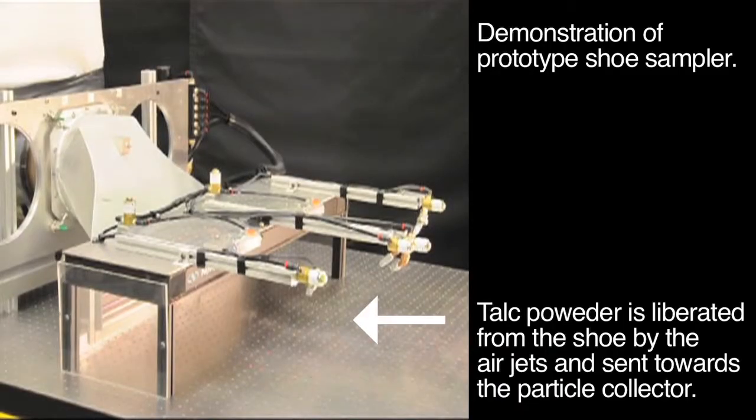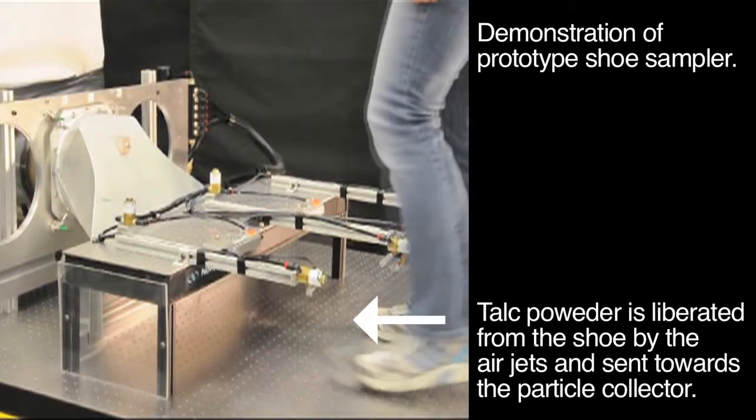What are some of the good ways to do it? What are the bad ways to do it? How do you actually measure the performance of a system that's going to sample shoes? The design that we came up with is a kiosk-style design. You walk in, you're sampled, and then you walk out, and the whole process takes about 10 seconds. It's an aerodynamic sampling approach.